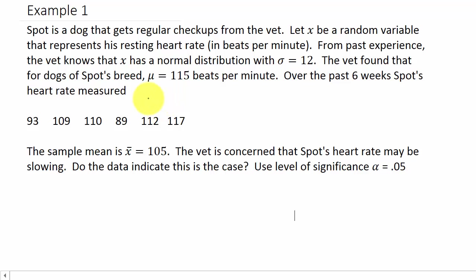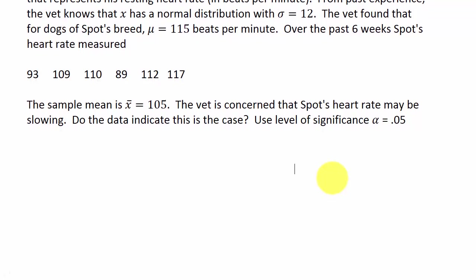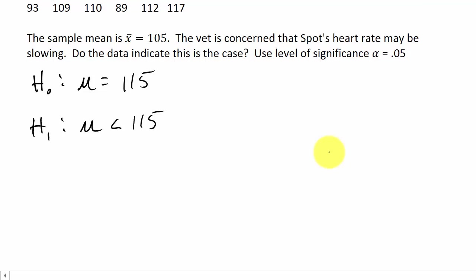Now what we need to do is state our null hypothesis and our alternate hypothesis. The null hypothesis is mu is equal to 115. Then our alternate hypothesis is mu is—we're thinking based on Spot's heartbeats that it's less than the 115, because Spot's heart rate is less than 115—so that's less than 115.